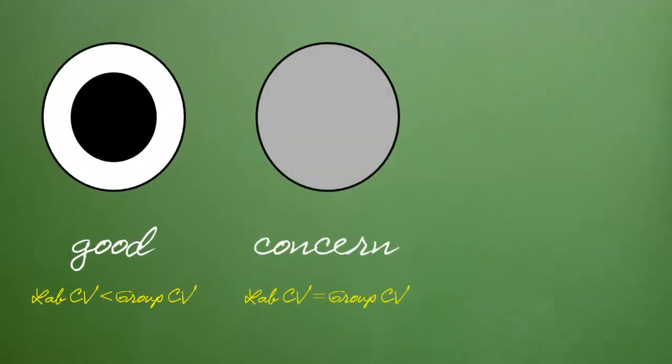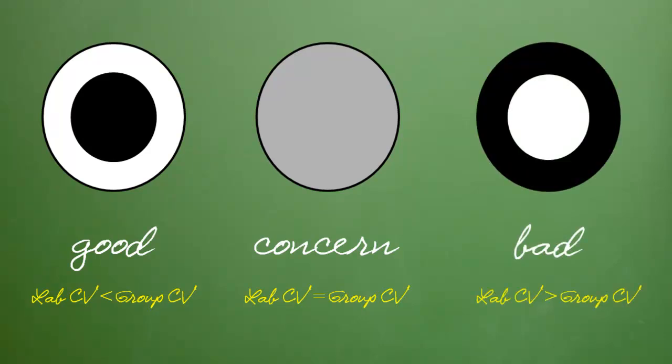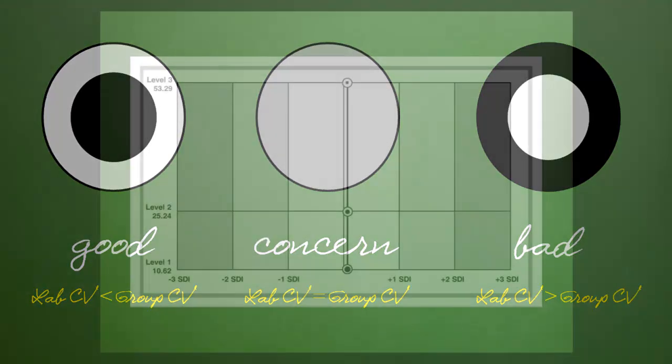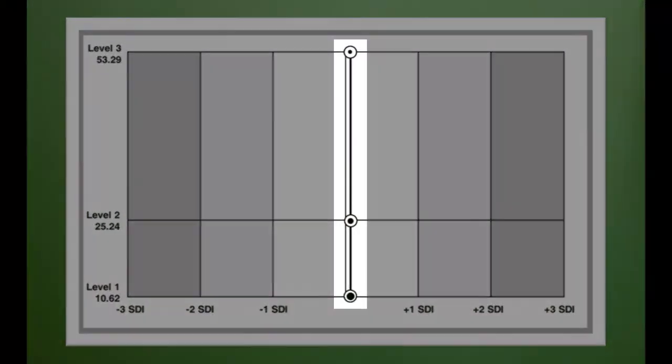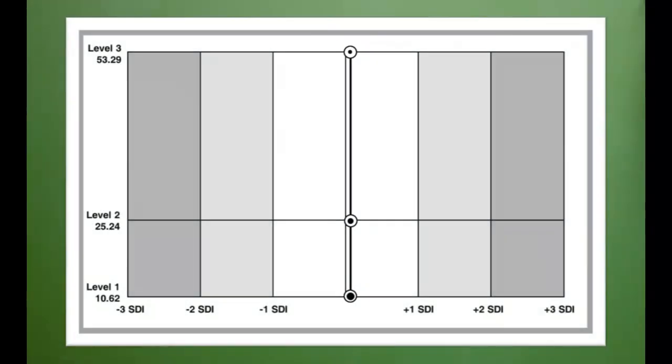So, to review. Control levels that look like donuts are good. Levels that are gray might make me sad and concerned. Levels that look like old tires might be bad. In this example, I have a donut shape for all three levels of control. So, I'm doing fine. Note that I have more donut at level 3 than at level 1.